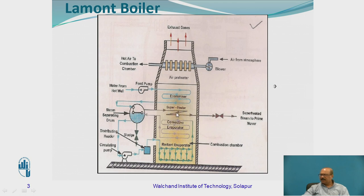And then this is the superheater section and this is the economizer. Then it goes to the air preheater.